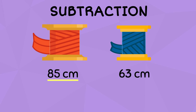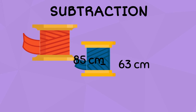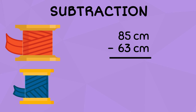Did you say eighty-five centimeters minus sixty-three centimeters? That's correct! The easiest way to do this is by writing the numbers so that the place values are lined up in columns. Then just subtract them starting with the numbers in the ones place. Starting with the ones, we have five minus three equals two.